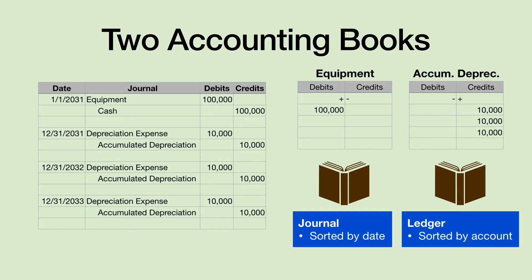In the old days, accountants had to input the transactions into both books. But nowadays, with computers, we don't even have to think of debits and credits. The data entry screens remove us from these debits and credits, although they still exist in the logic of the software. We just have to input to the computer one time and the computer will sort the data either by date or by account as needed.